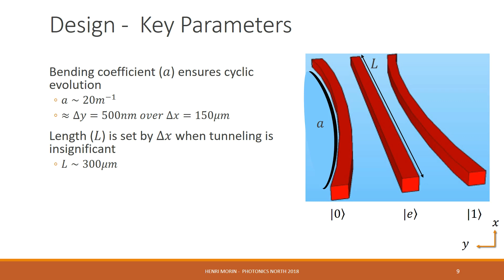In order to get the next key parameter, we need to define two subparameters. The first being the minimum distance between the one waveguide and the excited waveguide, called d0r. We have the same thing on the other side, called d0l. Specifically, it's the minimum distance between the zero waveguide and the excited waveguide. Together, they make the parameter delta d, and it's delta d that sets the ratio of tunneling rates and thus the gate type.